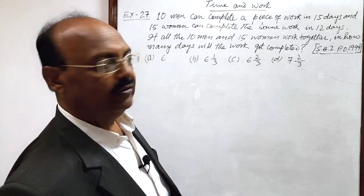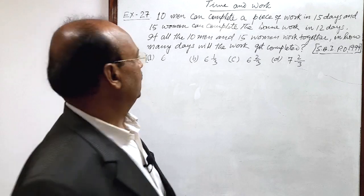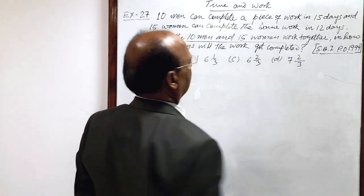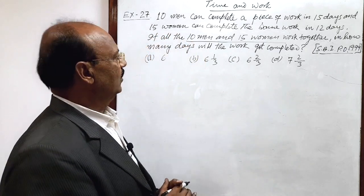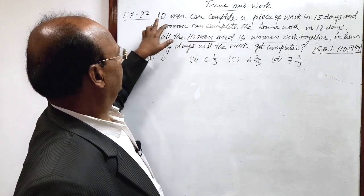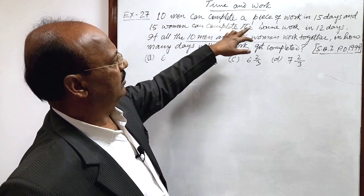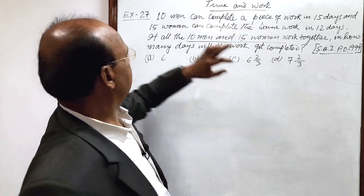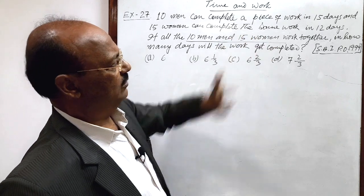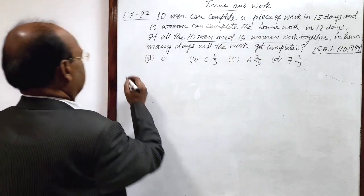First of all, here we need to find out what is the amount of work done by 10 men and 15 women working together. And we can find it very easily because this data is given. 10 men can complete a piece of work in 15 days and 15 women can complete the same work in 12 days. So let us see the solution here.